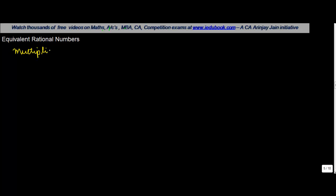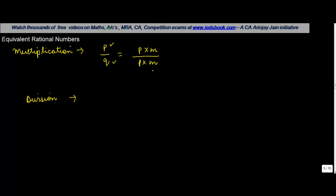Let us understand the concept of equivalent rational numbers. In some previous videos we discussed the multiplication and division property of rational numbers. The multiplication property says that if you have any rational number in the form of P upon Q, and you multiply both P and Q by the same nonzero number M, the result remains unchanged.